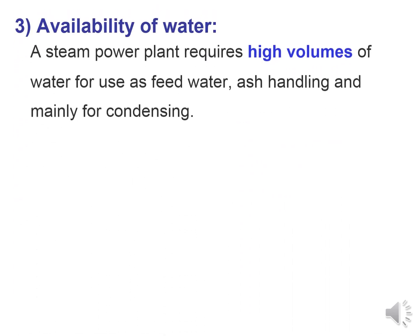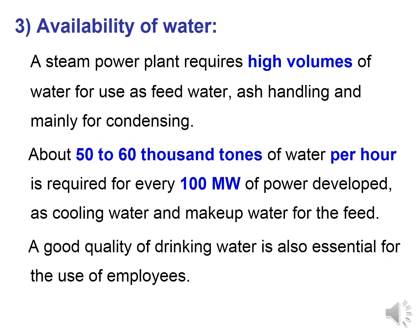High volumes of water are required for use as feed water, ash handling, and condensing. About 50,000 to 60,000 tons of water per hour is required for every 100 megawatt of power developed. We need a good quality of water for energy development and also for the drinking purposes of employees, as around 2000 people will be working in the steam power plant.